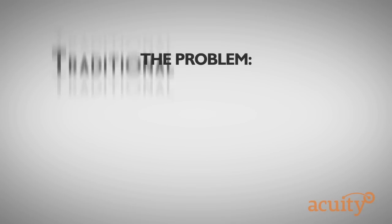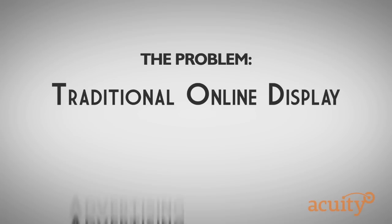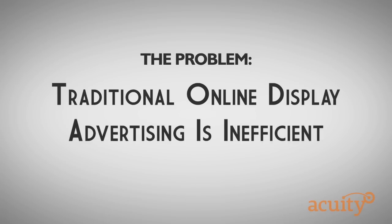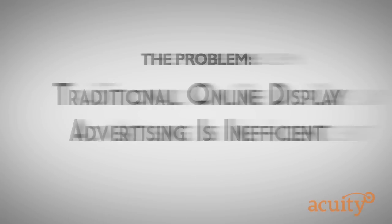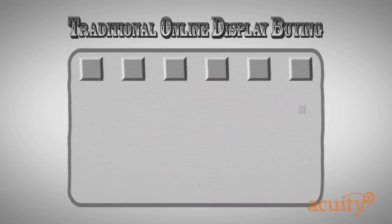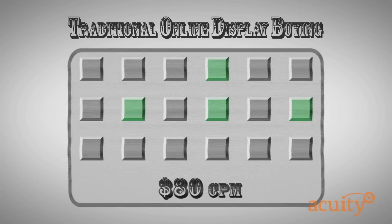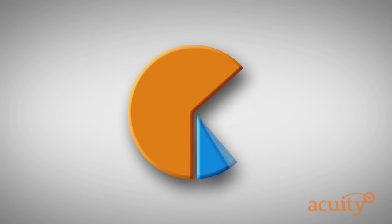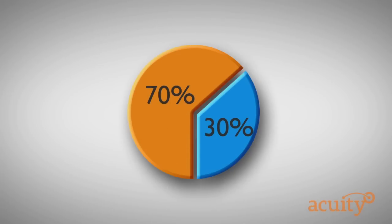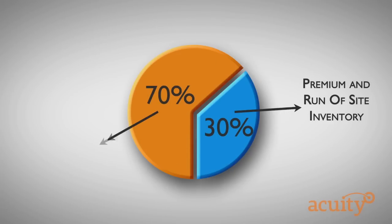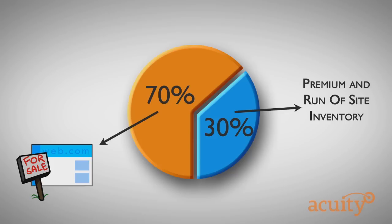The problem. Traditional online display advertising is inefficient. For advertisers, the CPM model of buying impressions in bulk is lacking because you are purchasing impressions for the same price per unit, even though each one has a different value to your campaign. For publishers, traditional display is inefficient because up to 70% of their inventory is left unsold or sold for next to nothing.